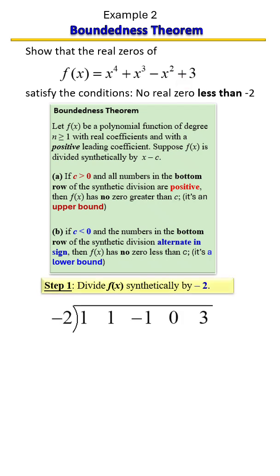We're going to start the process by bringing down the first term of one. Multiply that with negative two to get negative two. Bring down negative one. Multiply that with negative two to get two. Bring down one. Multiply that with negative two to get negative two. Bring down negative two. Multiply that with negative two to get four. Bring down seven.